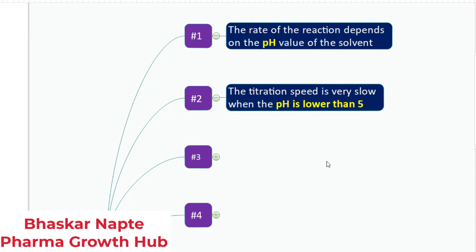But if the pH is less than 5, then the titration speed gets lower. So if you are getting a lot of time for completing the titration, please check the pH of your solution. During the KF determination, you may not be able to measure the pH. Once the analysis gets over, you can measure the pH of that solution so you can understand whether the pH is acidic, and if it is acidic, that could be the reason for the slow speed of your titration.